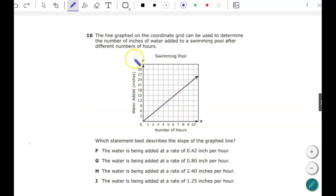All right, next one. A line graphed on the coordinate grid can be used to determine the number of inches of water added to a swimming pool after different hours. So 0 hours, 0. And then 1 hour, it's right below the 3 mark. And you can see it just goes up over the number of hours. Which statement describes the slope of the graphed line?